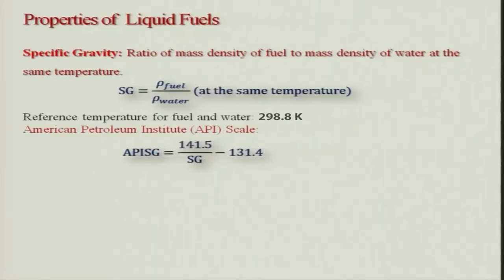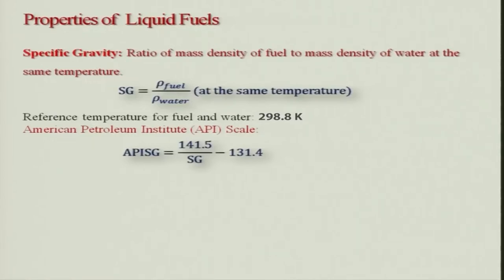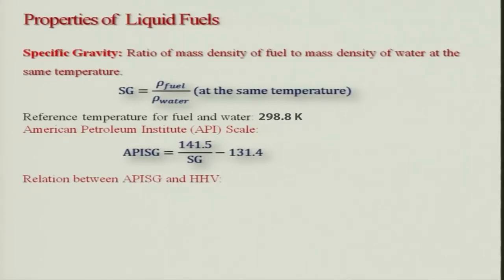The API Sg formula is: API Sg = 141.5 divided by Sg minus 131.4. These are constant values. The question might arise: why use API Sg instead of plain Sg? The API developed this scale because it can be used to find a relationship between the higher heating value and API Sg.